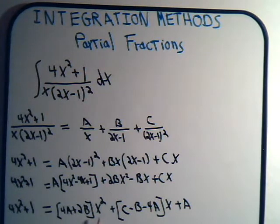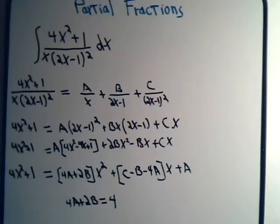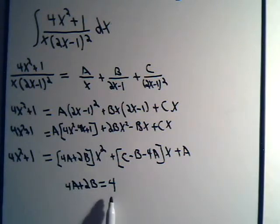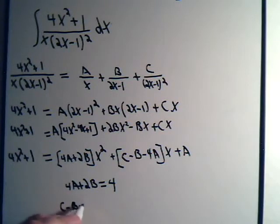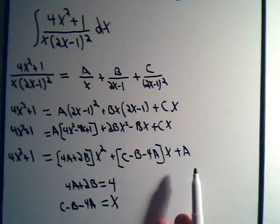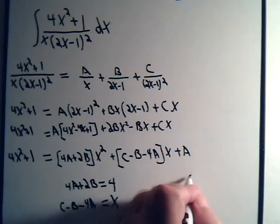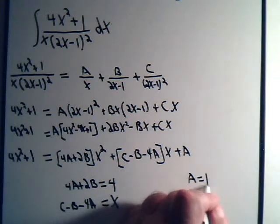Okay, there's an x squared here and an x squared here. This is multiplied by 4, so 4A plus 2B equals 4. C minus B minus 4A equals x.